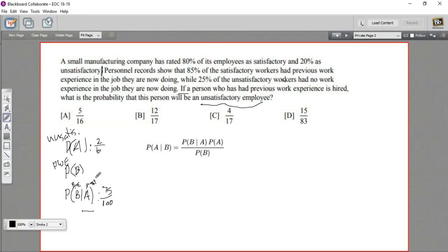Now, how do we find the probability of having previous work experience? Well, there's two groups of people here that we have information about. There are the satisfactory workers and the unsatisfactory workers. First of all, it tells us that 85% of satisfactory workers had previous work experience. So the probability for those people of having previous work experience, that's going to be 85 out of 100. And I'm going to multiply it by the probability of being a satisfactory worker, which is 80% or 8 out of 10. Now that's just one chunk of the workers. There are also the unsatisfactory workers. So I'm going to add something to that.